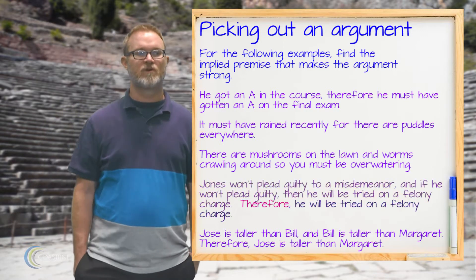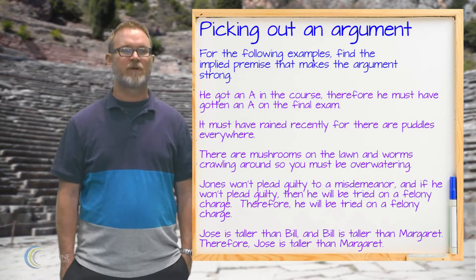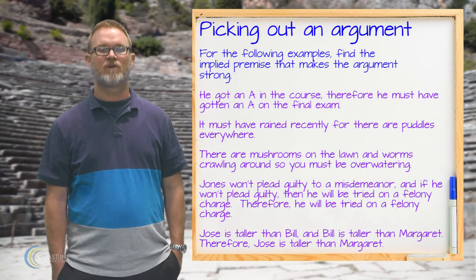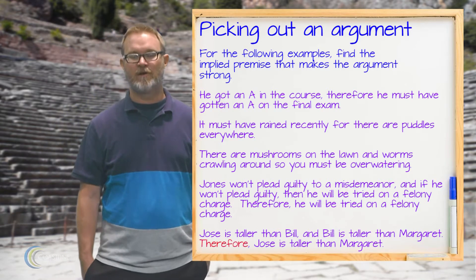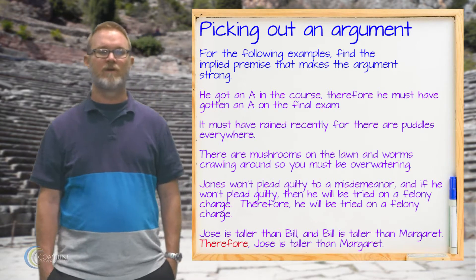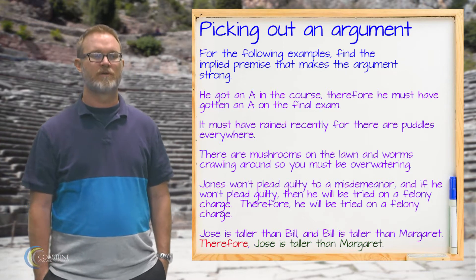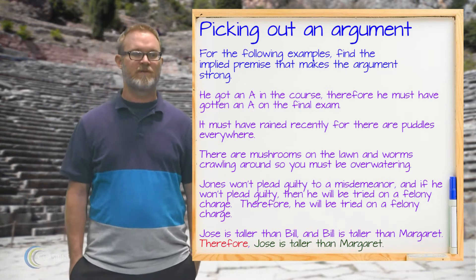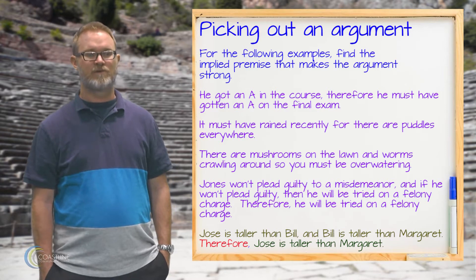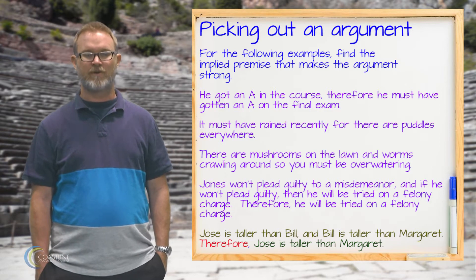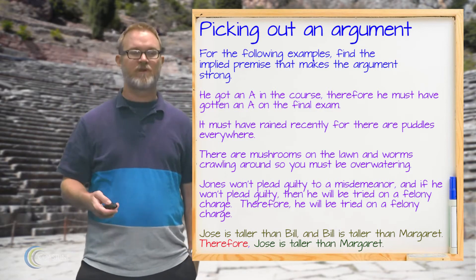The next example says: Jose is taller than Bill and Bill is taller than Margaret, therefore Jose is taller than Margaret. Again we have 'therefore,' so the conclusion is that Jose is taller than Margaret. Our premises are: Jose is taller than Bill, and Bill is taller than Margaret. That is our first set of examples.